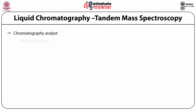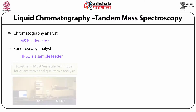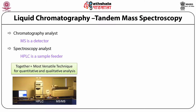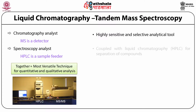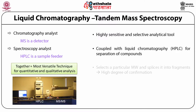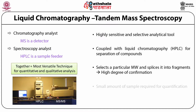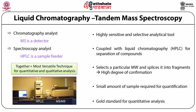For a chromatography analyst, mass spectroscopy is a detector, while HPLC is a sample filter. The HPLC separates the compounds and the mass spectrometer detects them. Together, LC-MS/MS is the most versatile technique for quantitative and qualitative analysis — highly sensitive and selective. It selects a particular molecular weight, fragments it to give high degree of confirmation, requires very small sample amounts, and is considered the gold standard for quantitative analysis.